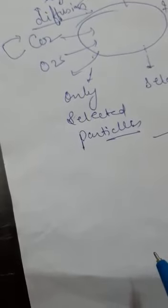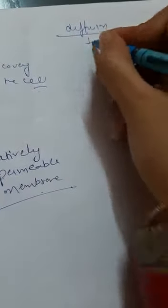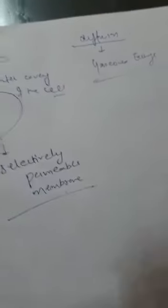Similarly, oxygen. Oxygen enters the cell by the process of diffusion when the level of concentration of oxygen inside the cell decreases. I repeat, the level of concentration of oxygen inside the cell decreases. Thus diffusion plays an important role in gaseous exchange. It helps in exchange of gases.